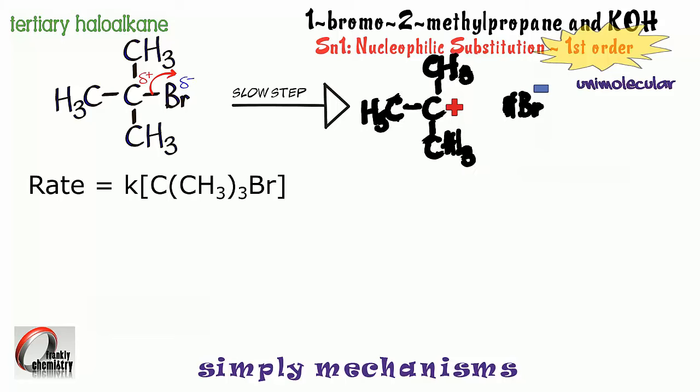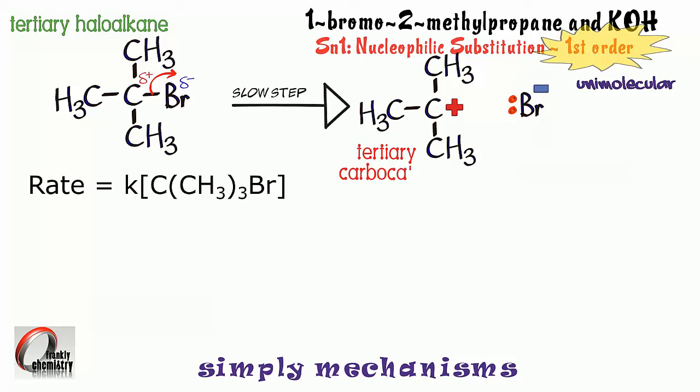So, let's tidy up the intermediates there. You see that I've put the two dots on the bromide ion. Those two dots represent the two electrons of what had been the C-Br bond of the tertiary haloalkane. So, at this stage I've got a tertiary carbocation and bromide ions.